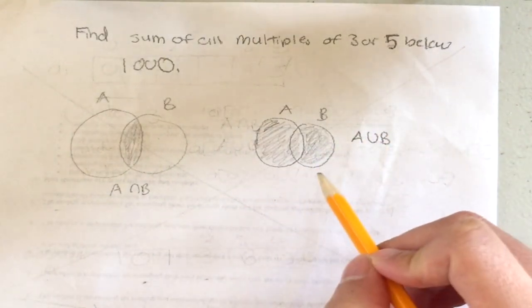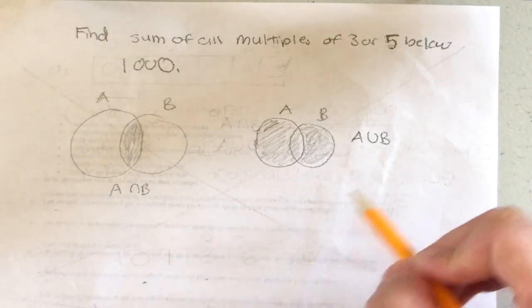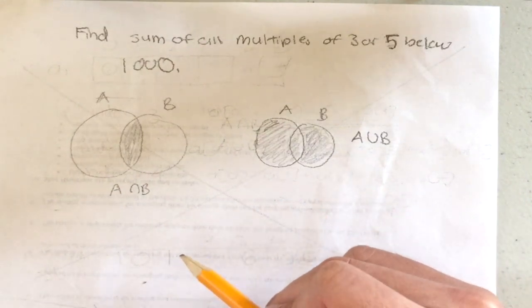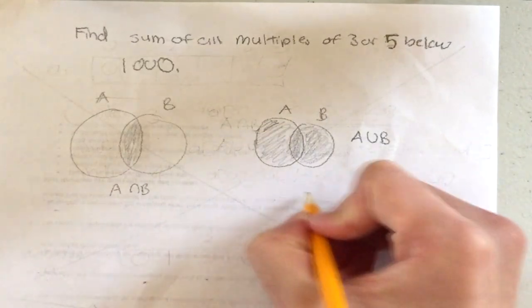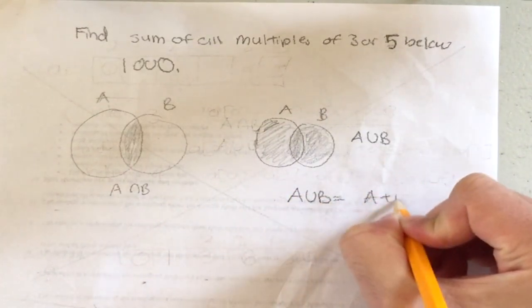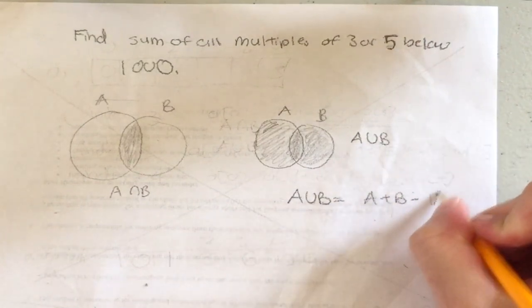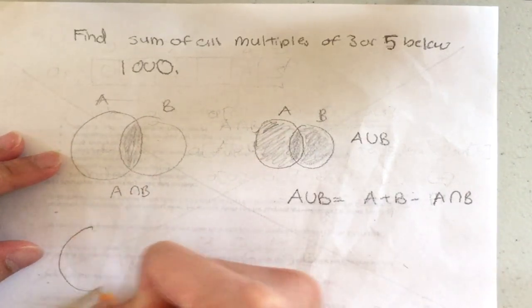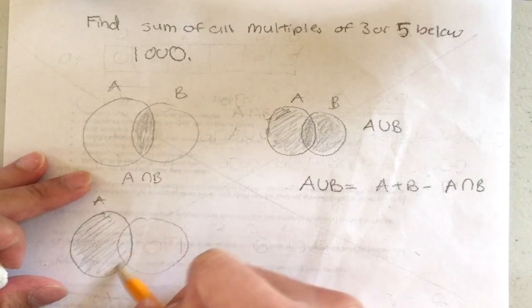You might be wondering how to calculate A union B — the group of numbers in A or B. What you do is add up the numbers in A, then add up the numbers in B, then subtract the intersection. So A union B equals A plus B minus A intersection B, and I'll show you why.